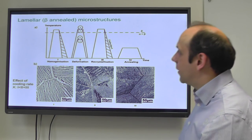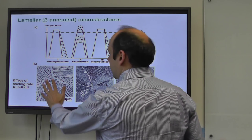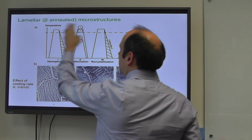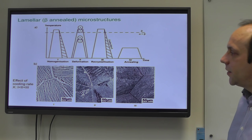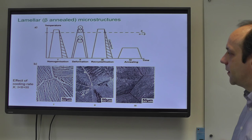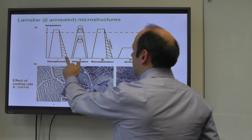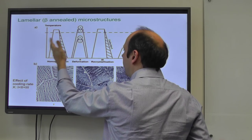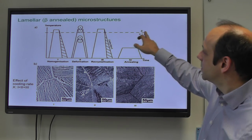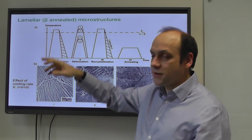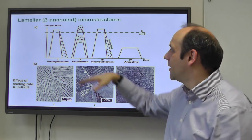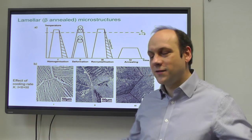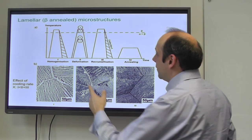To generate a lamellar or colony microstructure, you first homogenize above the beta transus, then when you cool down you can generate different length scales of alpha by cooling at different rates. You might then heat up either below or above the transus. If you deform above the transus, the beta recrystallizes and grains grow again. If you deform below the transus you'd be deforming alpha, but you wouldn't be able to recrystallize because the alpha would stop any new grains growing.